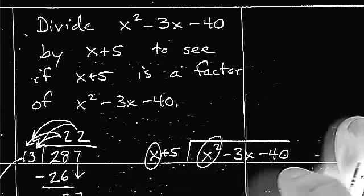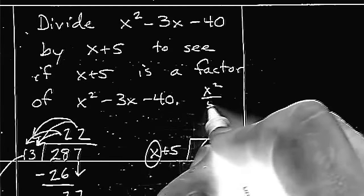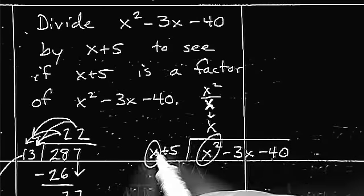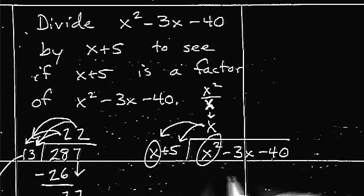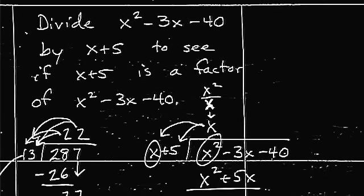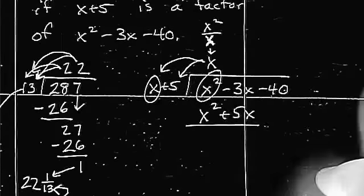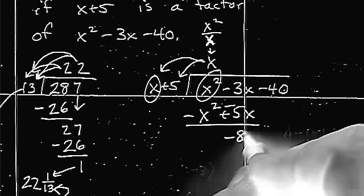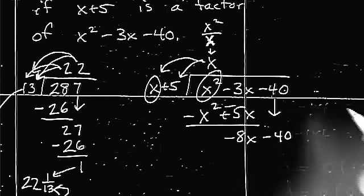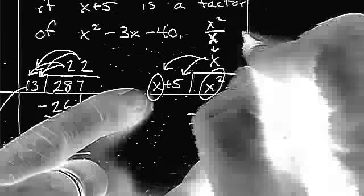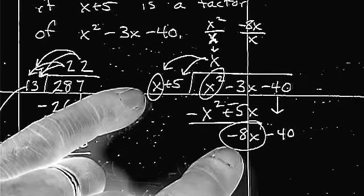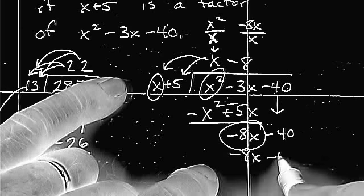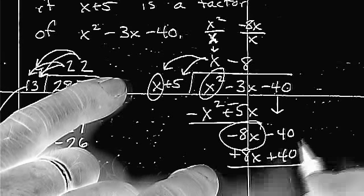So, the first thing you want to do is focus on the firsts. x squared divided by x. x squared divided by x. And you end up with x. So, you put that on the line. So, x gets multiplied times both of these things, giving me x squared plus 5x. Distribute the negative 1 and add. Those cancel. Negative 8x. Carry down the negative 40. Focus on that and that. Negative 8x divided by x. That is negative 8. And now you multiply this times both of these, giving me negative 8x minus 40. Distribute and add.